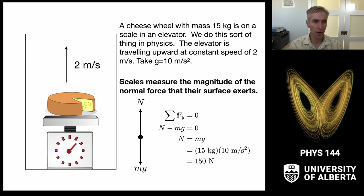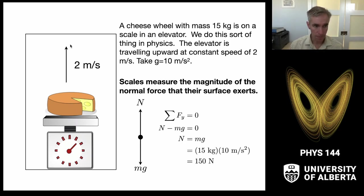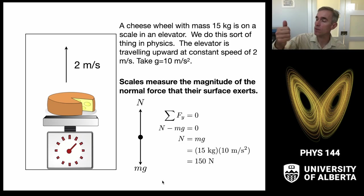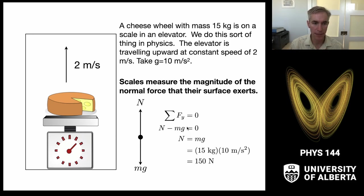What forces are involved? I'm going to examine the cheese. There are two forces acting on it: the force upward from the scale — that's the normal force — and the weight of gravity on the cheese pulling downward. In the coordinate system I've defined, where y is going upward, the normal force is positive and mg is negative. So N minus mg equals zero for zero acceleration, and I can just solve: N equals mg.